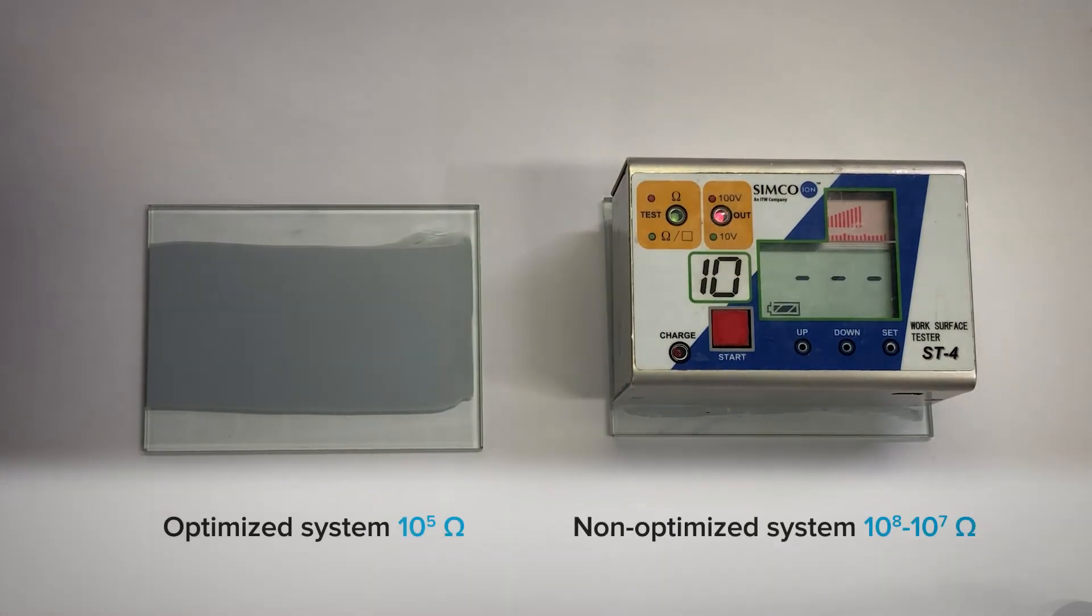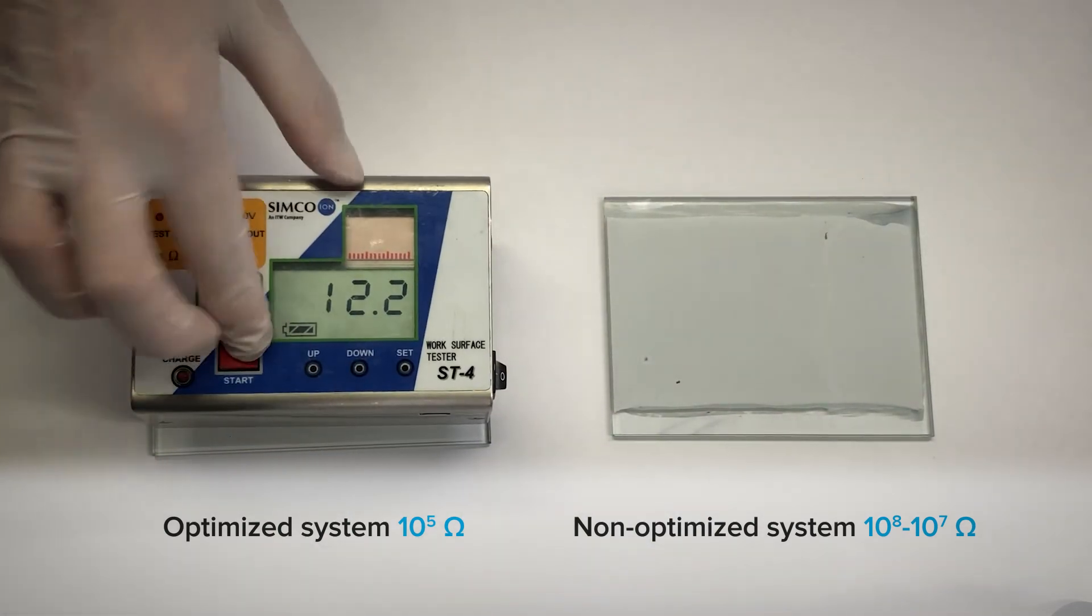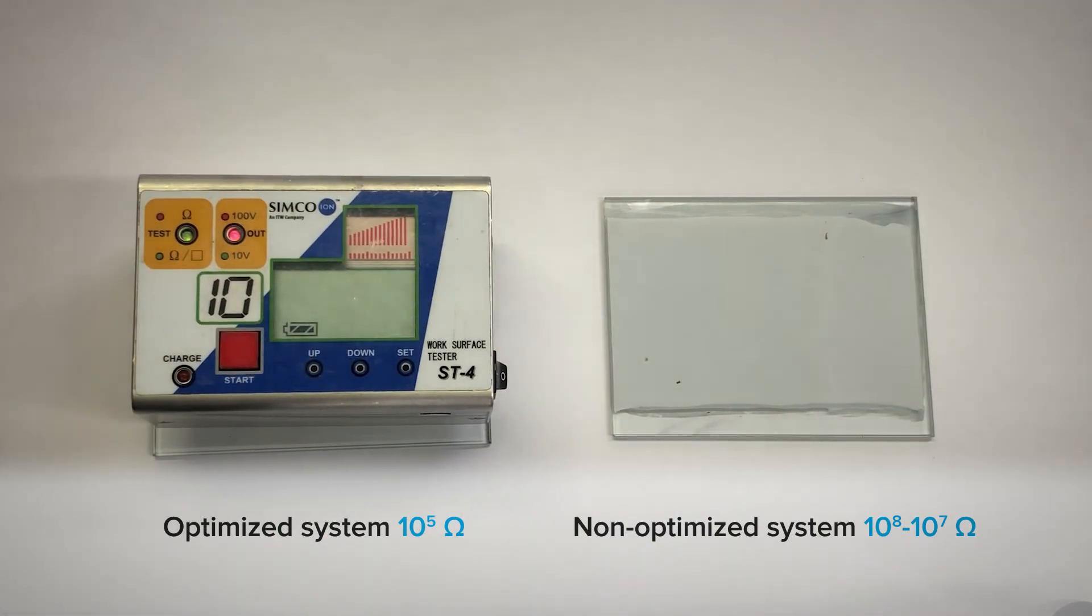Even when no visible defects can be observed, an incompatibility between Tuball matrix and other components in your system can lead to a decrease of your electrical properties.